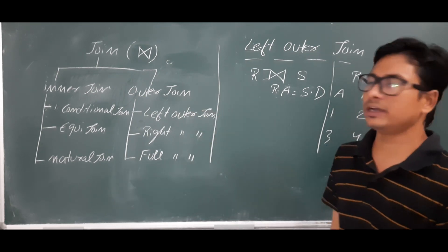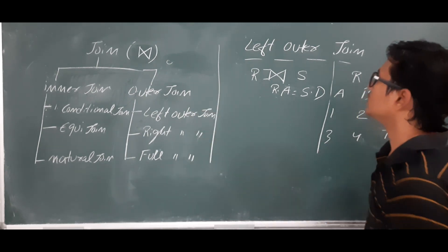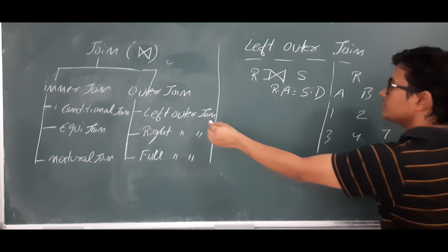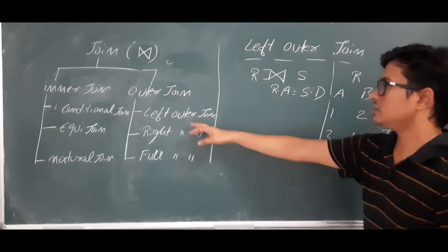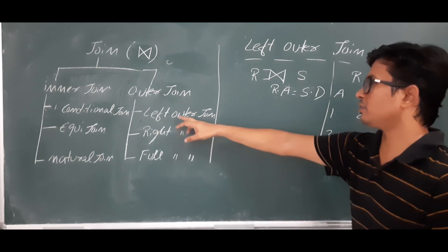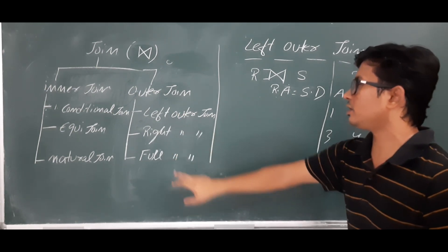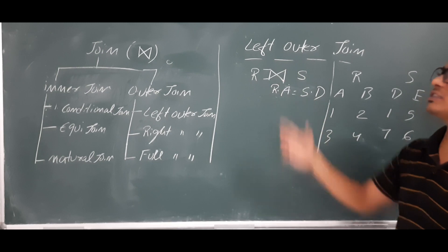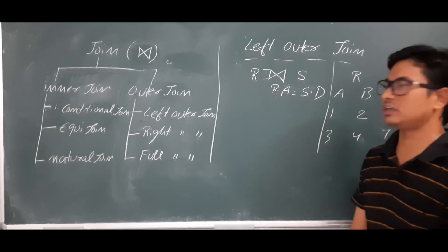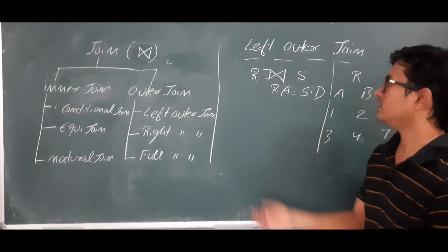Outer join is of three types: left outer join, right outer join, and full outer join. First we will discuss about what is a left outer join.